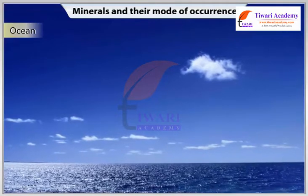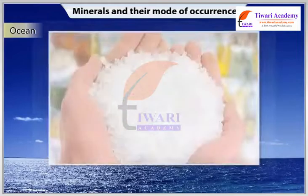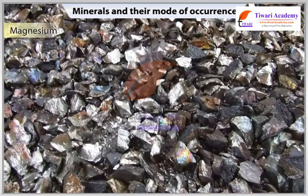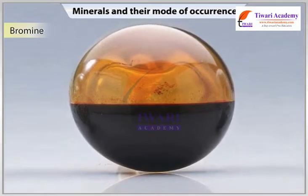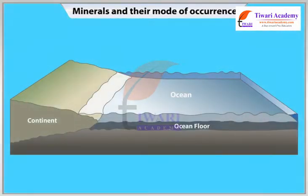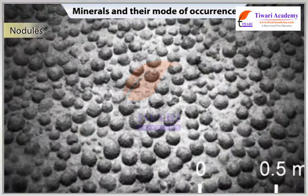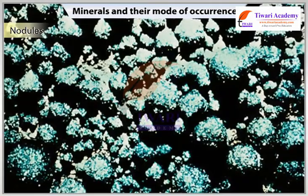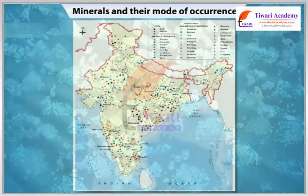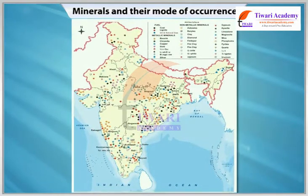The ocean waters contain vast quantities of minerals. Common salt, magnesium and bromine are largely derived from ocean waters. The deep ocean floor contains extremely large quantities of nodules ranging from centimeters to decimeters in diameter, representing the largest known resource of magnesium.